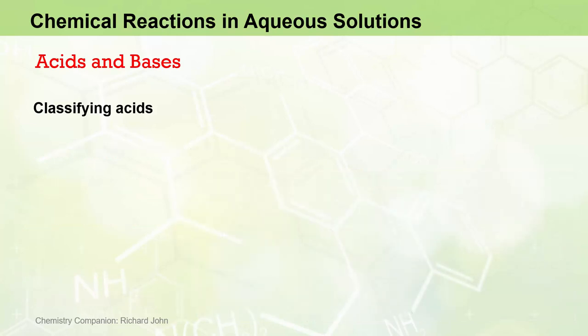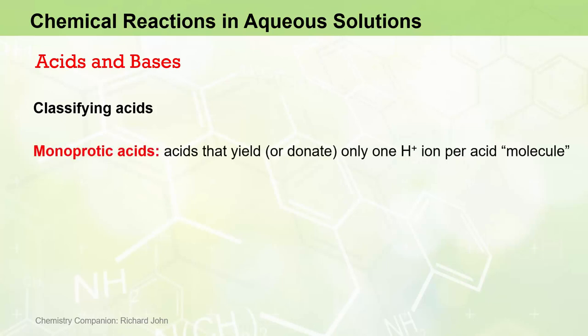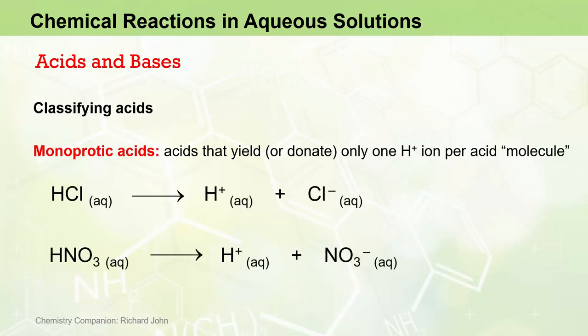Acids can also be classified in terms of the number of protons they can donate to a solution. For example, monoprotic acids are acids that yield or donate only one H-plus ion per acid molecule to the solution. So hydrochloric acid and nitric acid are both examples of monoprotic acids. They only yield one H-plus ion per acid unit when dissolved in solution. The charge on the corresponding anion is one minus for monoprotic acids.